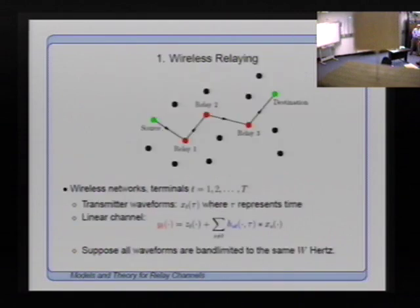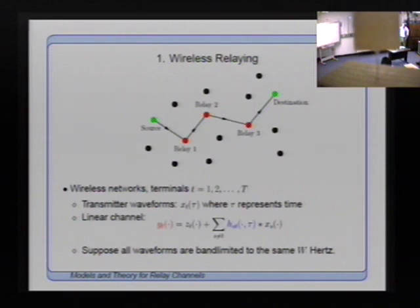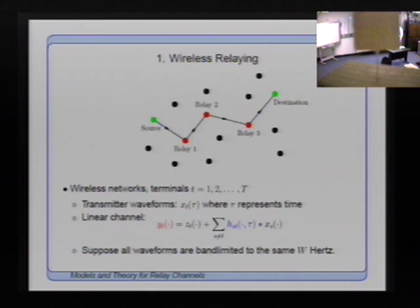I'd like to talk about wireless relaying, emphasizing the wireless part. Suppose we have a network — a graph where nodes represent terminals. Suppose one terminal is a source and another is a destination. Sometimes it is more efficient, rather than transmitting directly from source to destination, to send data via some relay terminals.